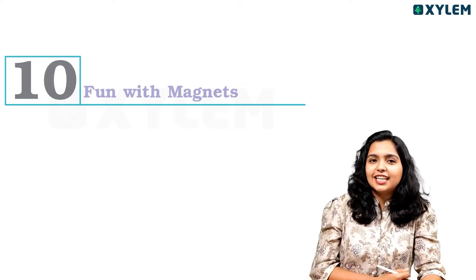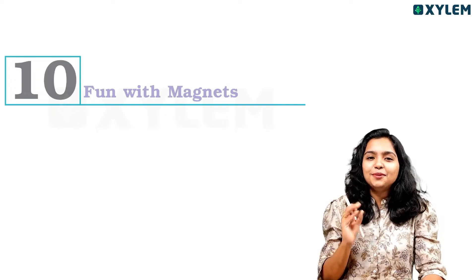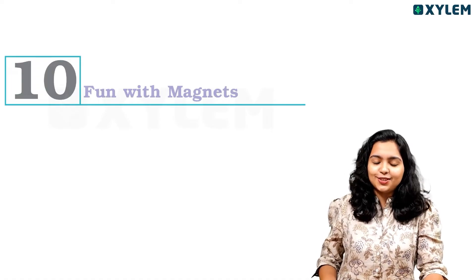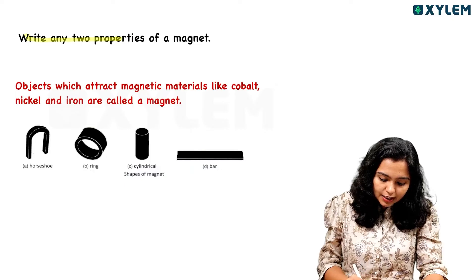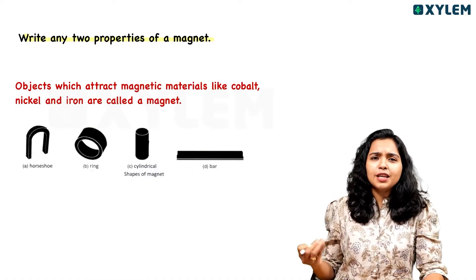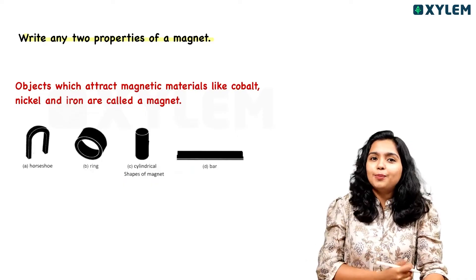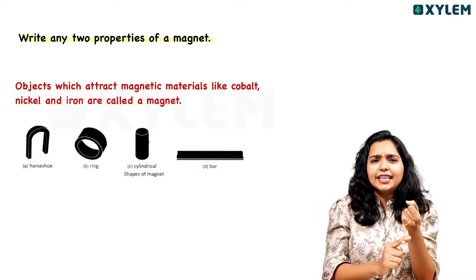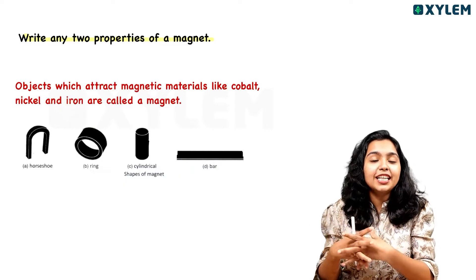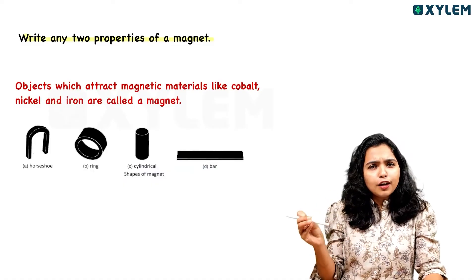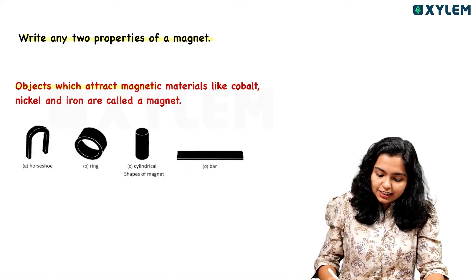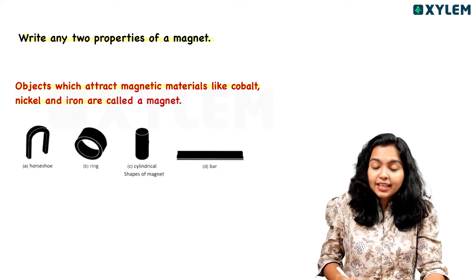In our chapter, we will discuss the two properties of a magnet. We will discuss the definition — a magnet is an object which attracts magnetic materials like cobalt, nickel, and iron. We will also discuss the magnetic substance and how magnets are used in daily life.